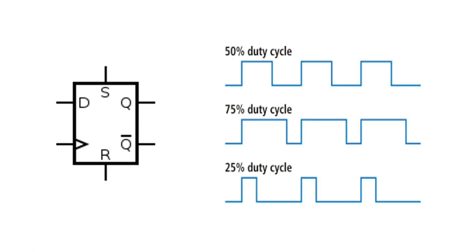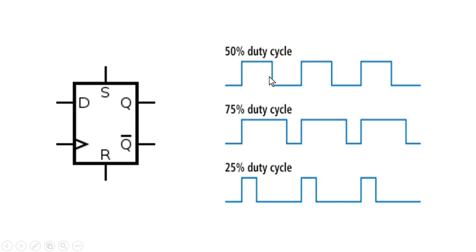We always define a flip-flop such that if it is a positive edge triggered flip-flop, then D should be passed to Q at the positive edge of the clock. Similarly, we define its behavior for the negative edge. In static timing analysis we must fulfill the setup and hold requirements, but we never talk about the duty cycle of the clock — and this minimum pulse width requirement is associated with duty cycle only. For example, a signal with 50% duty cycle means logic high remains for 50% of the total time period. Similarly, 75% duty cycle means logic high remains for 75% of the total time period.